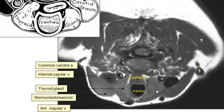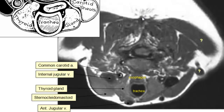This is the sternocleidomastoid muscle, and crossing superficial to it is the external jugular vein. Posterior to the sternocleidomastoid is the posterior triangle, bounded posteriorly by the trapezius muscle, which is attached posteriorly to the ligamentum nuchae.